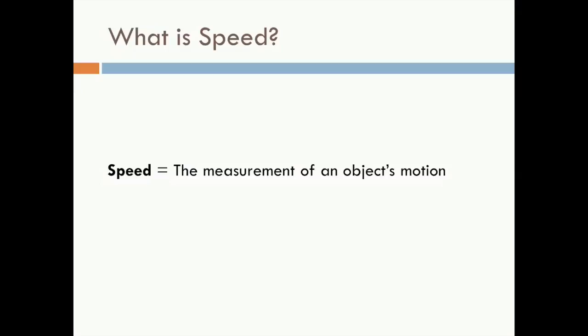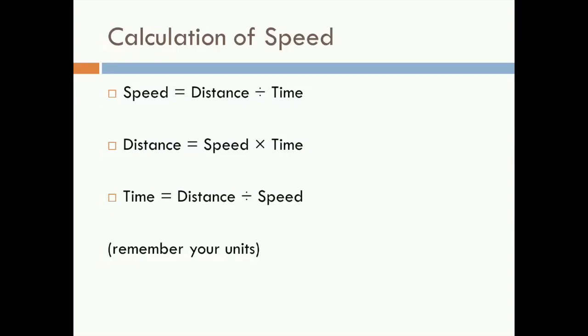You should have all agreed that speed is the measurement of an object's motion. Formally, speed is defined as distance divided by time and has units of distance over time. It's also important to solve for distance, which is speed multiplied by time, and time, which is distance divided by speed. You should make yourself familiar with these equations. Remember your units.